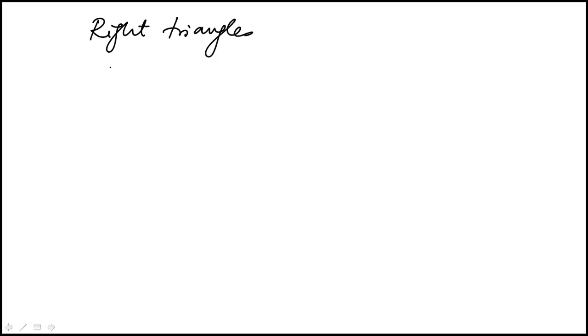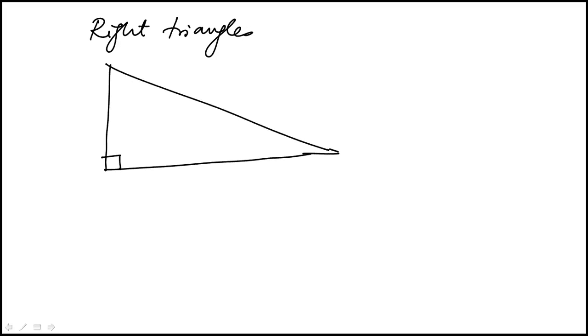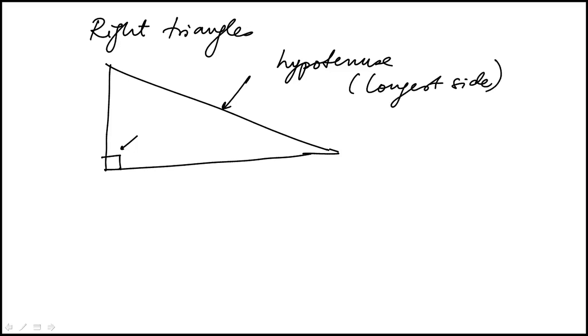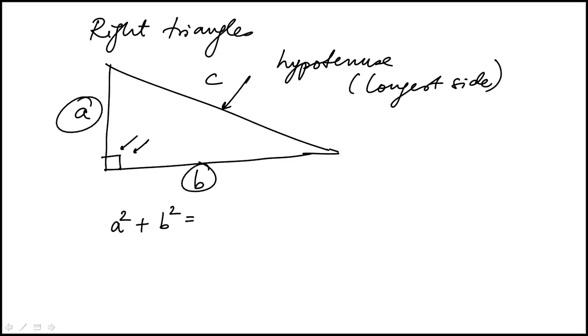Right triangles are triangles where one angle is 90 degrees. The side opposite the 90-degree angle is called the hypotenuse, and it is also the longest side since it is opposite the largest angle. The relationship between the sides is given by the Pythagorean theorem: A squared plus B squared equals C squared, where C is the hypotenuse.